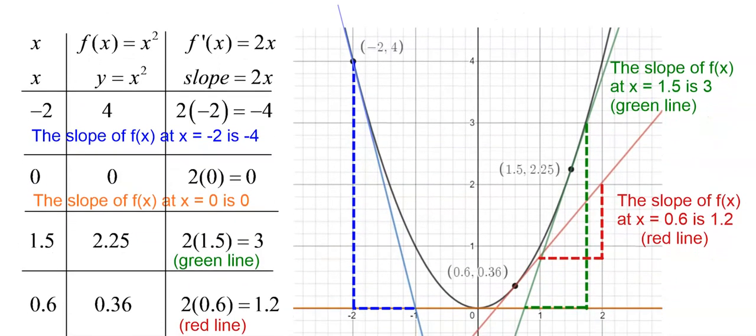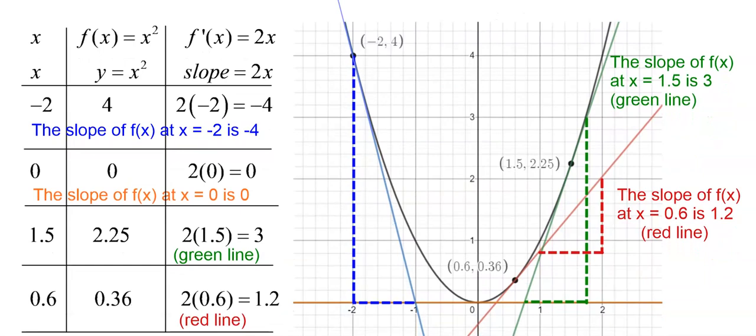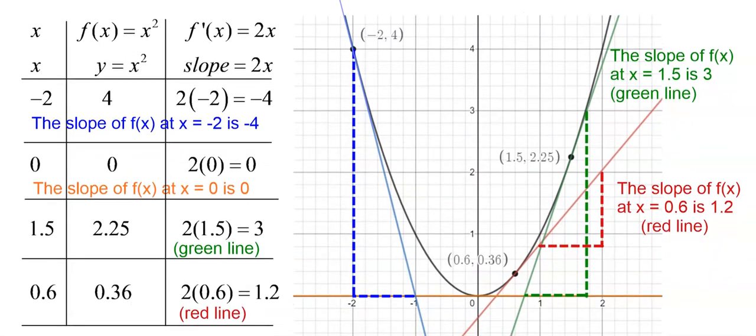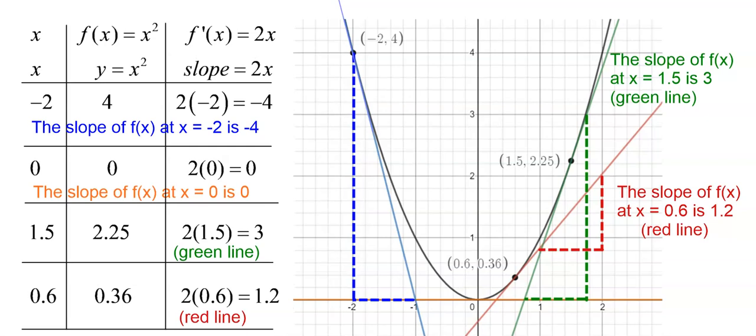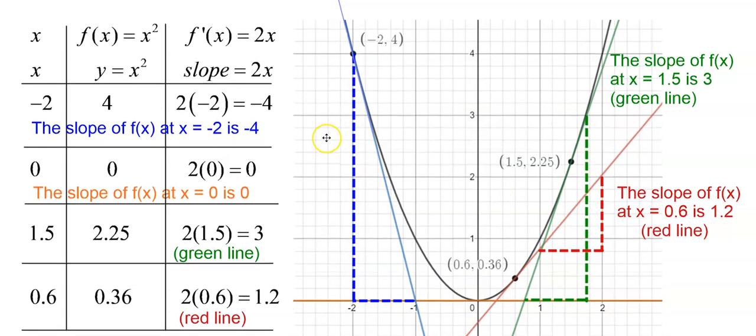Now this is kind of a complicated picture, so I'm going to talk you through it. But I want you to notice this table over here, first of all. And maybe I should cover up the graph and just kind of look at the table first, but just ignore the graph for the moment. Let's look at the table. So what I have here is some various x values. Now you might think, why did I pick those x values? Just to have a variety of different places on the graph that we could look at. So I picked x equals negative 2, x equals 0, x equals 1.5, and x equals 0.6.